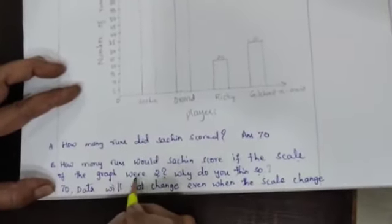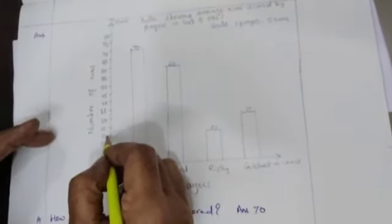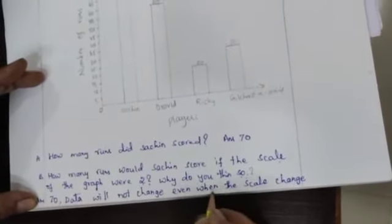Part B: how many runs would Sachin score if the scale of the graph were 2? Why do you think so? See, suppose children, if you take scale 2, 4, 6, 8, 10, like this, if you change the scale to 2, what will happen children? It will be changed. Sachin scored here 70. The scale will be changed if you take scale 2, 4, 6, 8. But Sachin's runs will be the same: 70. Data will not change even when the scale changes. Same runs will be shown on scale if scale changes. Data will not be changed, but bar graph length of the bar will be changed. But runs will be the same.